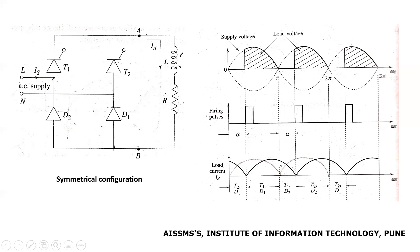During this freewheeling interval, the load current starts gradually decreasing from maximum magnitude towards zero. At instant π + α, a triggering pulse is provided to T2, which turns T2 on. The source voltage — which is now a reverse source voltage — gets applied across T1, and T1 gets commutated.